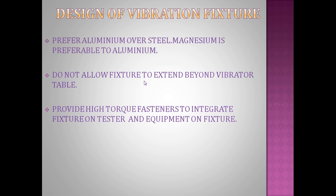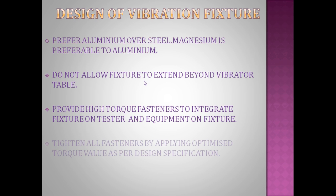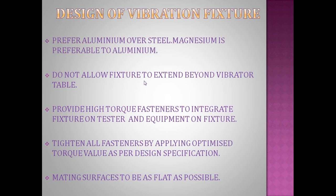Tenth, provide high-torque fasteners to integrate the fixture on the tester and the equipment on the fixture. Different fastener types such as cheese head or socket head have different torque values — always use high-torque fasteners tightened to the optimized torque value as per design specification. Eleventh, mating surfaces must be as flat as possible — use GD&T to maintain flatness, as this increases area contact and decreases stress.